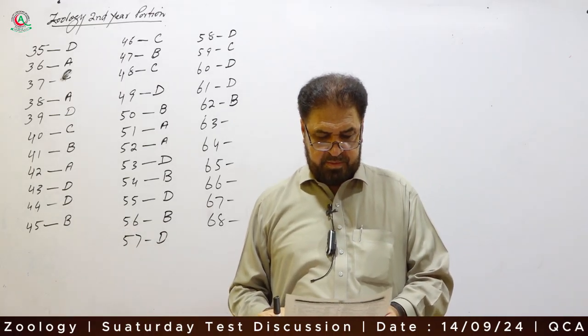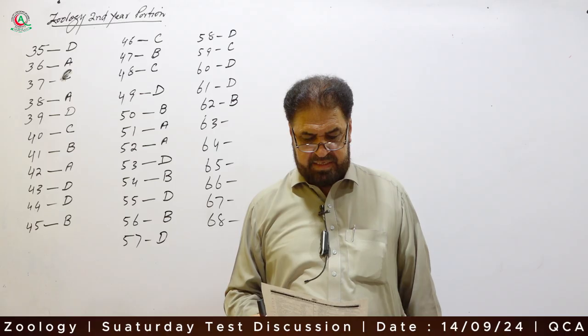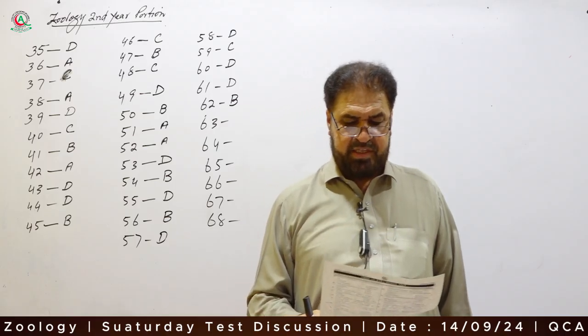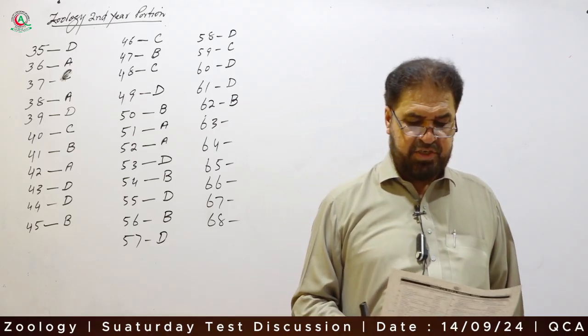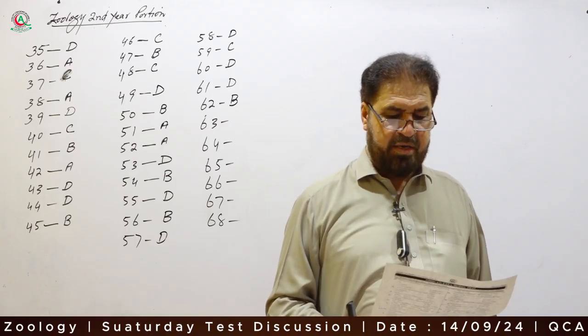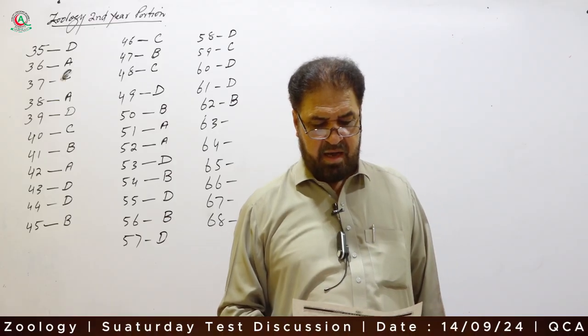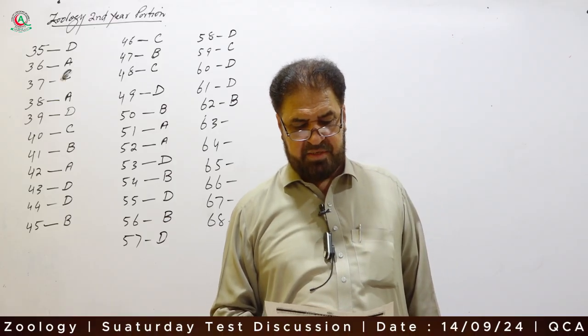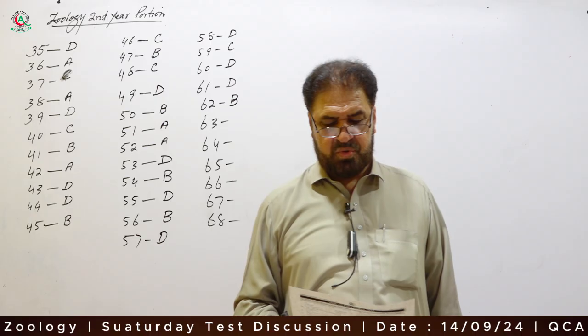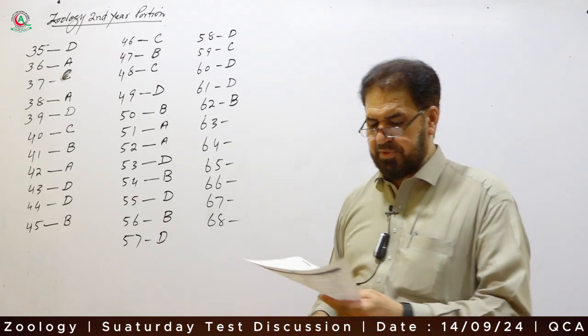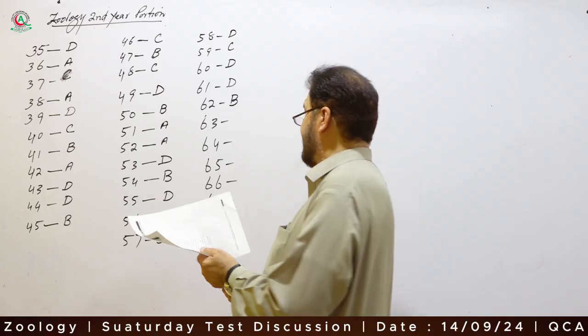Question 63: The genotypic ratio in the F2 generation of a monohybrid cross will always be 1:2:1. Option B is correct.